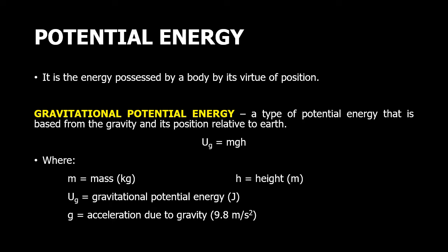An example of potential energy is the gravitational potential energy. So to compute for the gravitational potential energy, that would be U_g = mgh, where m is the mass in kilograms, g is acceleration due to gravity which is equal to 9.8 meters per second squared or 9.81, and h is the height in meters.